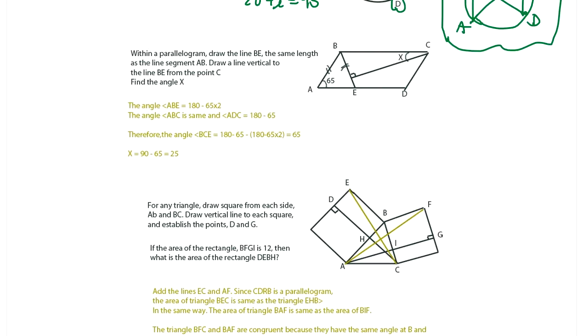Within a parallelogram, draw the line BE the same length as the line segment AB. AB and BE. So it's going to be isosceles triangle here. Draw a line vertically to the line BE from C. So draw this line vertically. Find the angle X. What is the X here?